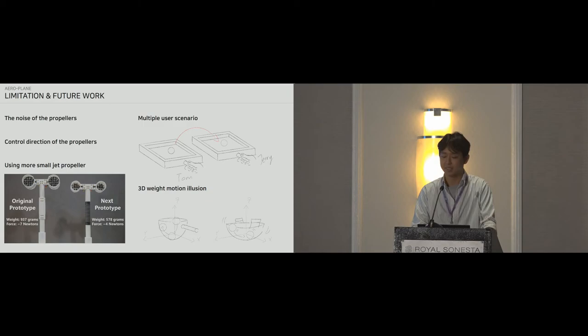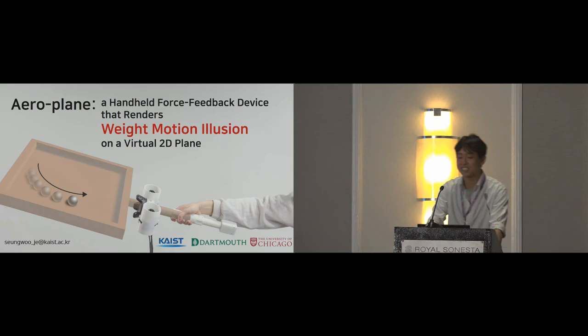Third, the weight and size of prototype depends on the maximum force to render, which is delivered from object and size of the 2D plane. So the study we conclude that we can use a smaller jet propeller, which will make the next version of the prototype smaller and lighter. We also will try other scenarios. For example, first is multiple user scenario with multiple devices. For example, tossing the ball and playing game with others. Another scenario is 3D weight motion illusion. For example, in study 2, the participants enjoyed the kitchen application, and they suggested it would be great to have a cooking scenario for cooking Chinese food in a wok instead of a frying pan.